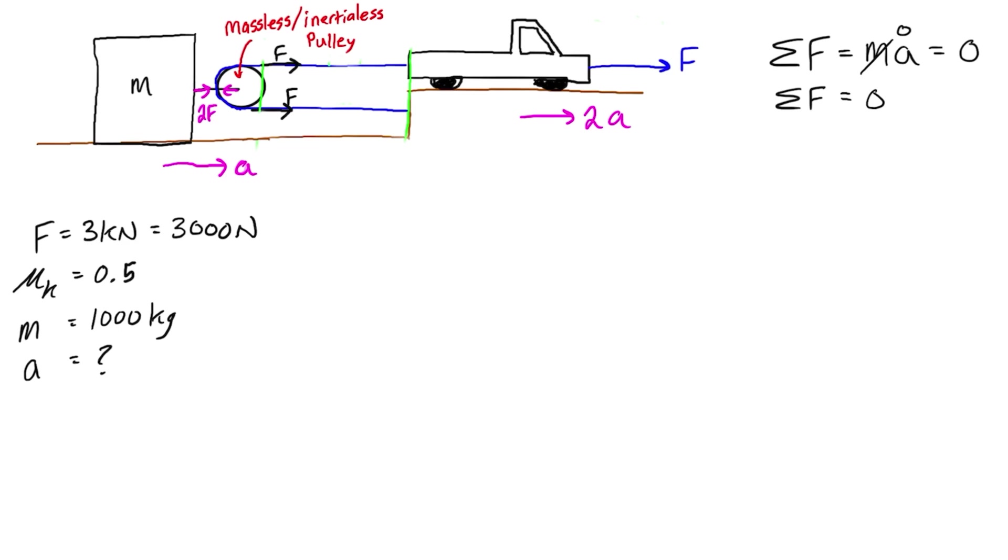Let's draw a free body diagram of the block so we know exactly what's going on here. We've got its mass of a thousand kilograms. We have a force pulling on it to the right of 2F so that is going to be equal to 6000 newtons, three kilonewtons times two.